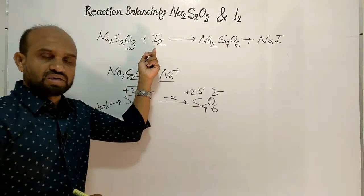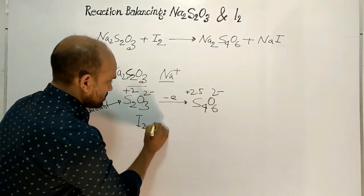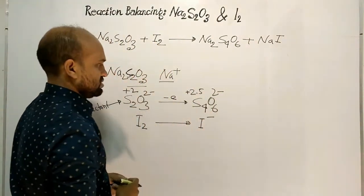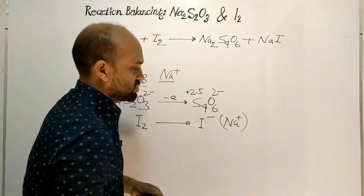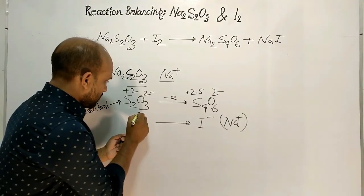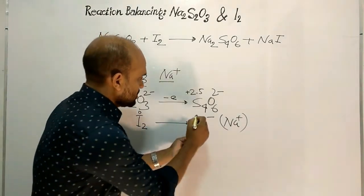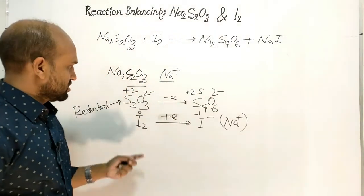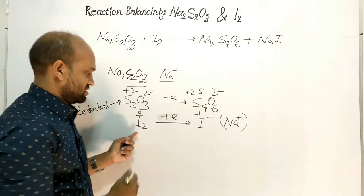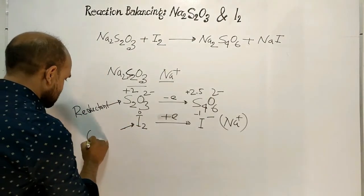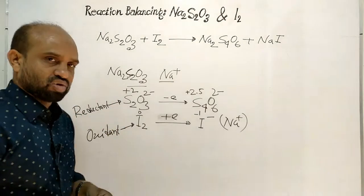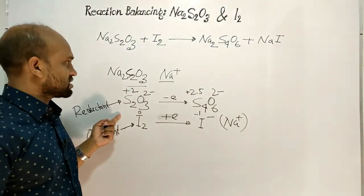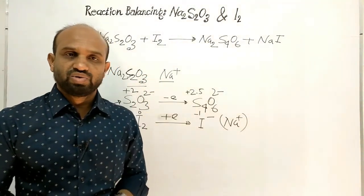The other compound, iodine, is converted to sodium iodide, i.e., iodide ion — the sodium ion is a spectator ion here. The oxidation number of iodine goes from 0 to −1, so iodine accepts electrons. An electron acceptor is an oxidant, so iodine acts as the oxidant in this reaction, while thiosulphate ion is the reductant.